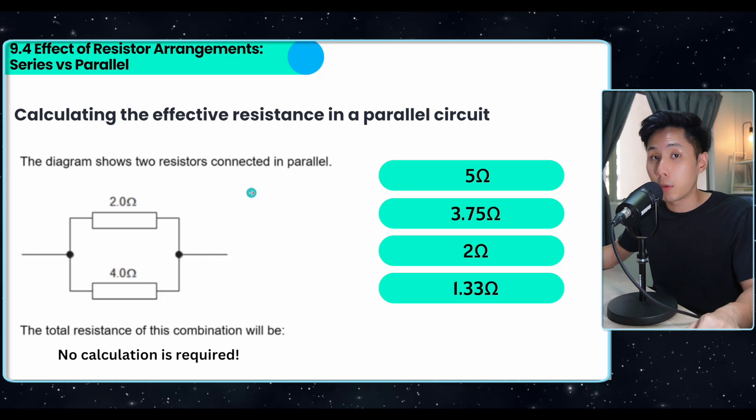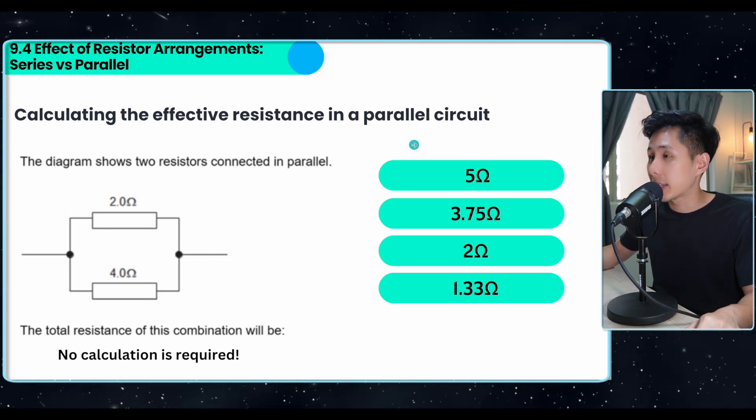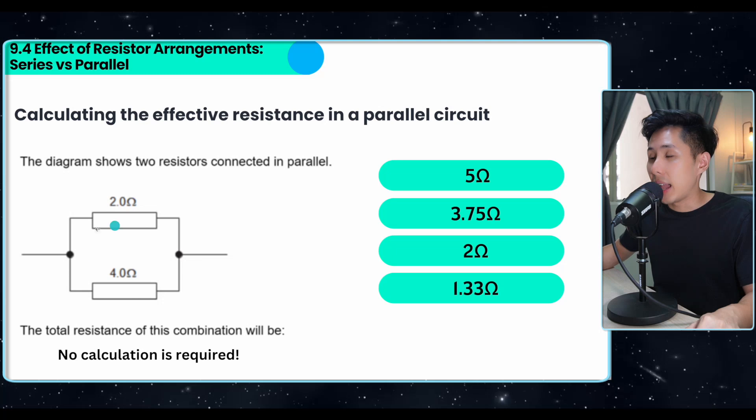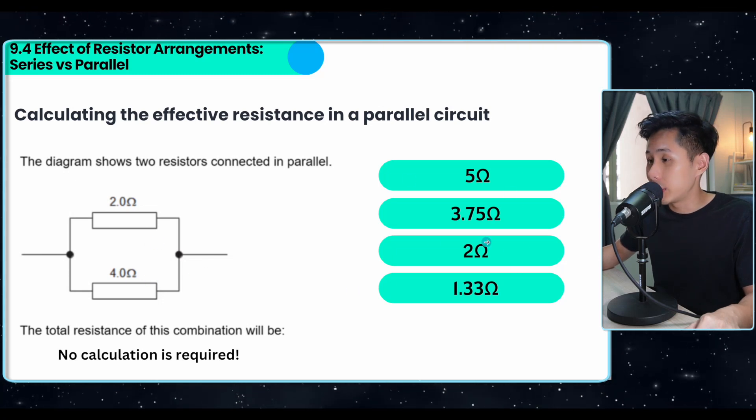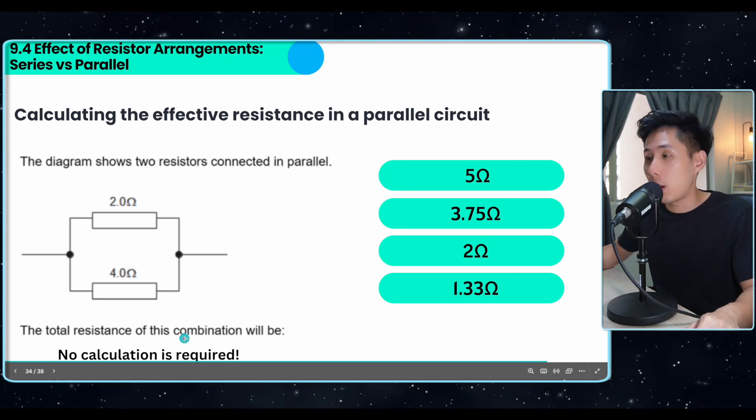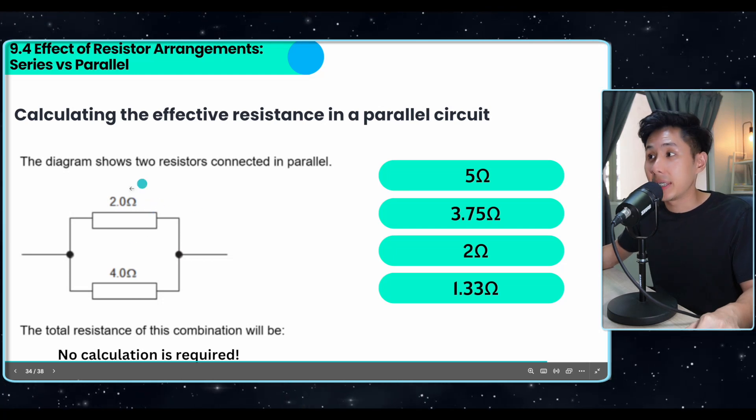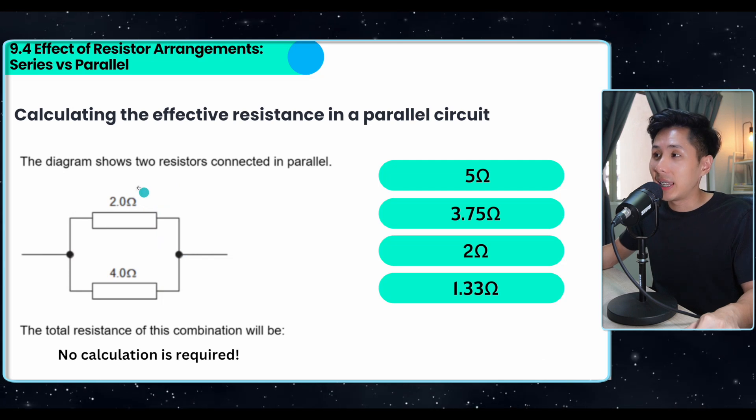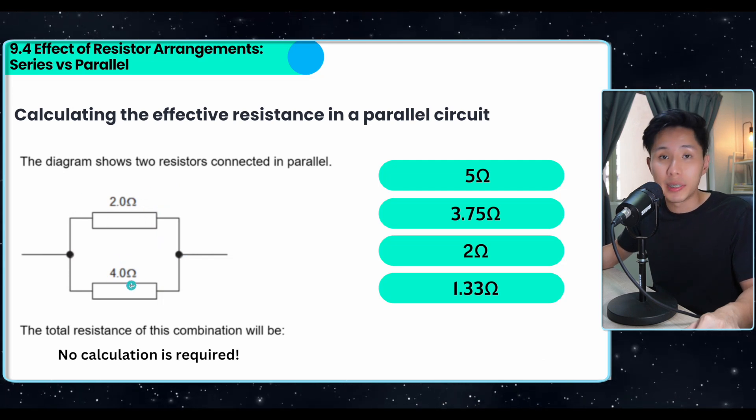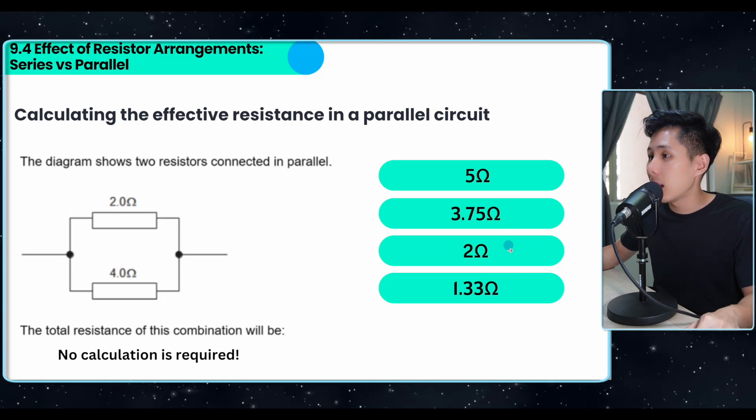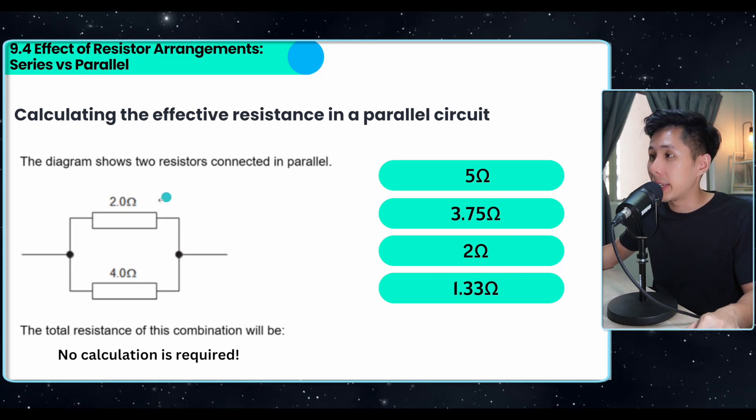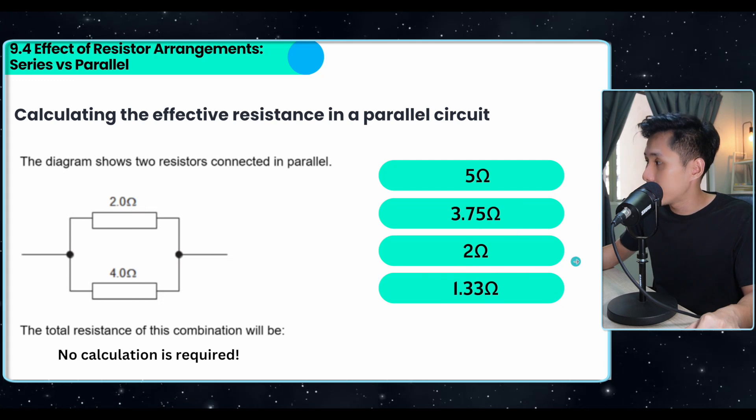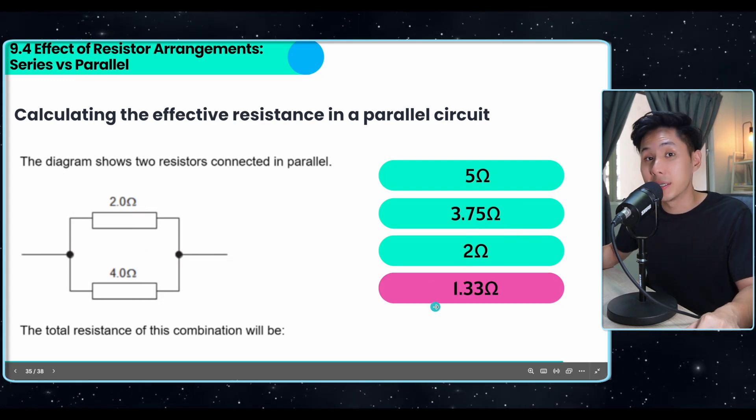Now let's solve some question. How do we calculate the effective resistance in a parallel circuit? They asked us what the total resistance will be among all these choices, and no calculation is required. So one thing you need to take note is that the effective resistance in a parallel circuit will be way less than the resistance of individual resistor. So if you look at these four choices, only 1.33 is lower than 2 and 4, and because of that, that will be the effective resistance.